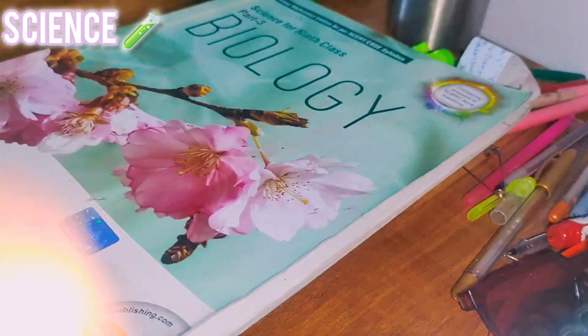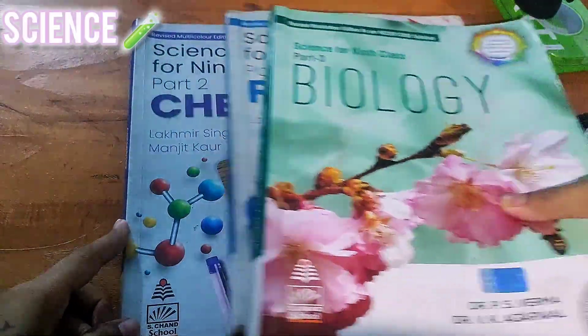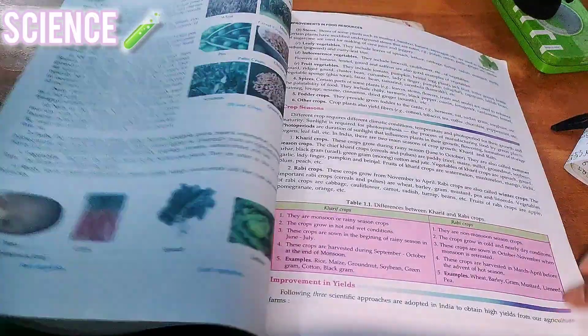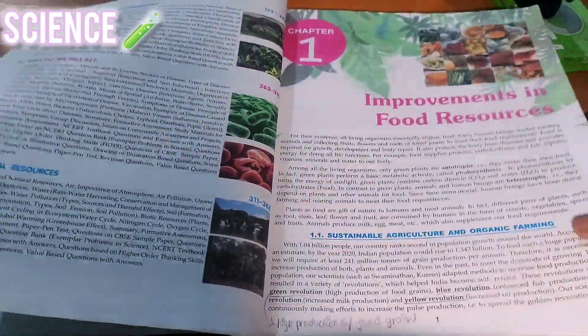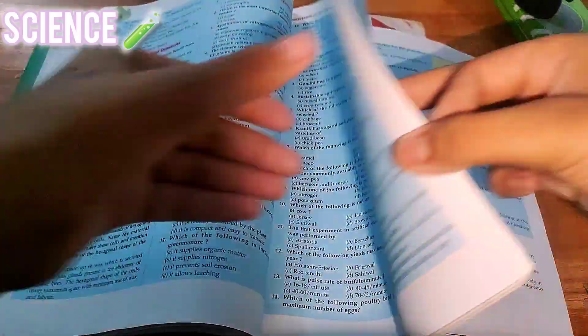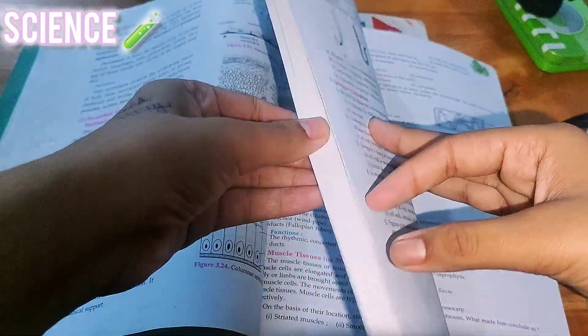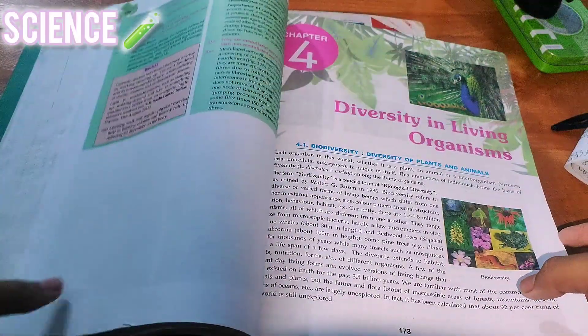The biology one has a lot of deleted portions. This one had Improvement in Food Resources deleted, so let me show you another chapter. As you can see, it is so well explained. You could just read it and understand it. You don't even need to watch any one-shot videos.